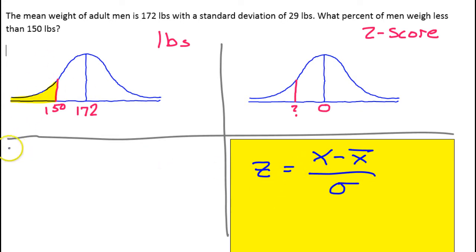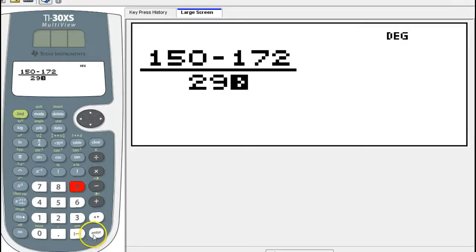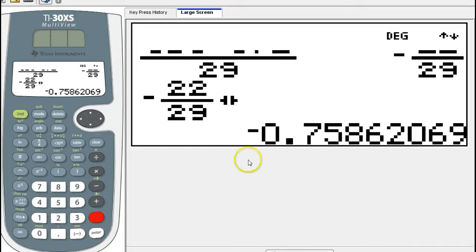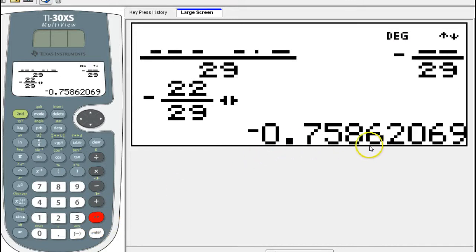Let's do that right now. To find the z-score, I'm going to take my value of 150. I'm going to subtract the mean, and I'm going to divide by the standard deviation, which was 29. Let's see what we get.